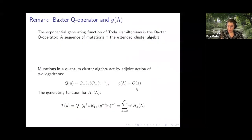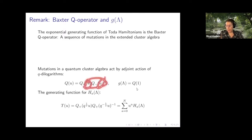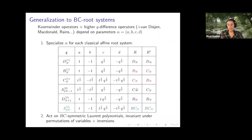In the remaining time, a remark about the Baxter Q operator: there is a Baxter Q operator which one can compute from the action on the quantum cluster algebra — see Schrader and Shapiro. The Baxter Q operator has a spectral parameter, and if you evaluate the spectral parameter to be one, you find this time-translation operator, if you know how to work with quantum dilogarithms.